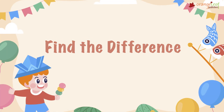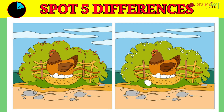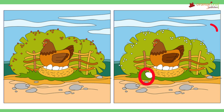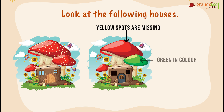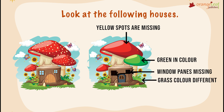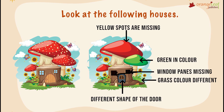Find the Difference. Find the difference is a form of visual puzzle in which the objective is to distinguish between two images. There could be a distinction in the form of pattern, color, object, location, or anything else. Look at the following house. If you observe carefully, yellow spots are missing, this part is green in color, and the blue design window panes are missing. The grass color is different and the shape of the door is also different.